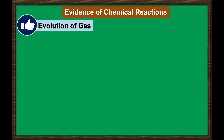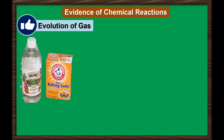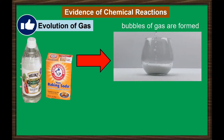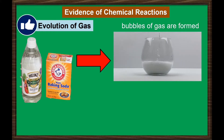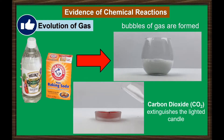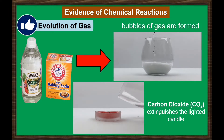Another evidence is the evolution of gas. For example, when you mix together baking soda and vinegar in a container, a chemical reaction happened because of the presence of bubbles. The evolved gas is carbon dioxide, which is a colorless and heavy form of gas. To test the formation of carbon dioxide, it can be used to extinguish a lighted candle. The carbon dioxide displaces the oxygen, which is needed to make fire.